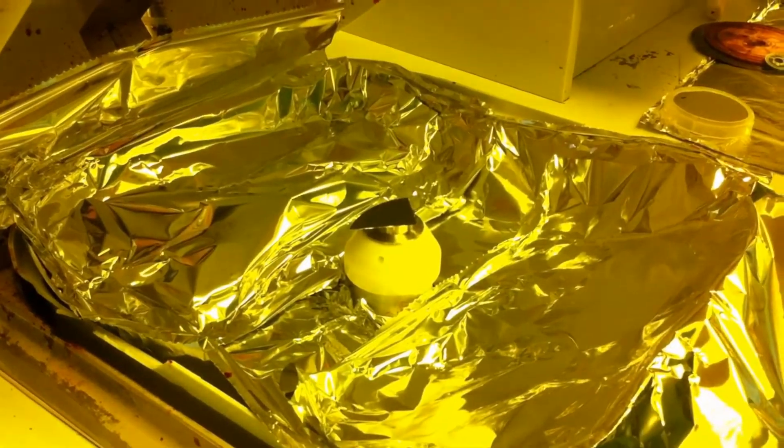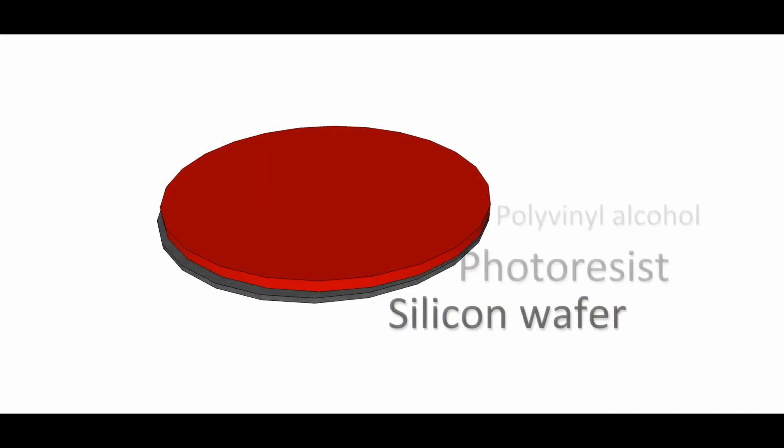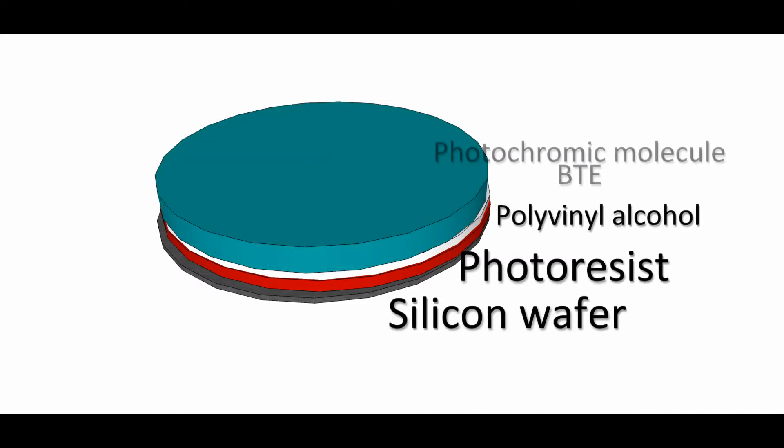To do nanolithography, we start by spinning photoresist on a piece of silicon wafer. Next, we put a layer of polyvinyl alcohol and a photochromic layer of BTE on top. These samples can now be used to do exposures.